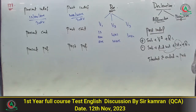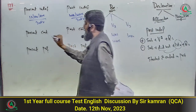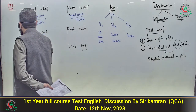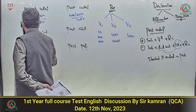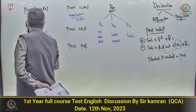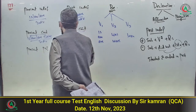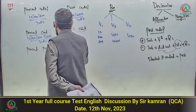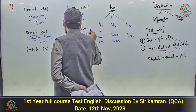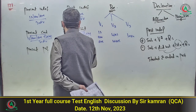Continuous کو دیکھیں — continuous کی نشانی ing form ہے۔ Present continuous passive میں: is/am/are + being + third form of verb۔ Past continuous passive میں: was/were + being + third form of verb۔